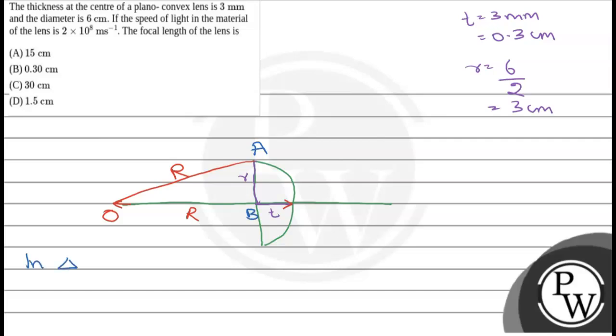So in triangle AOB, we can see this is a right angle triangle. So R² will be equal to OB² plus small r². Now OB is basically capital R minus T, so it's (R - T)² plus r².